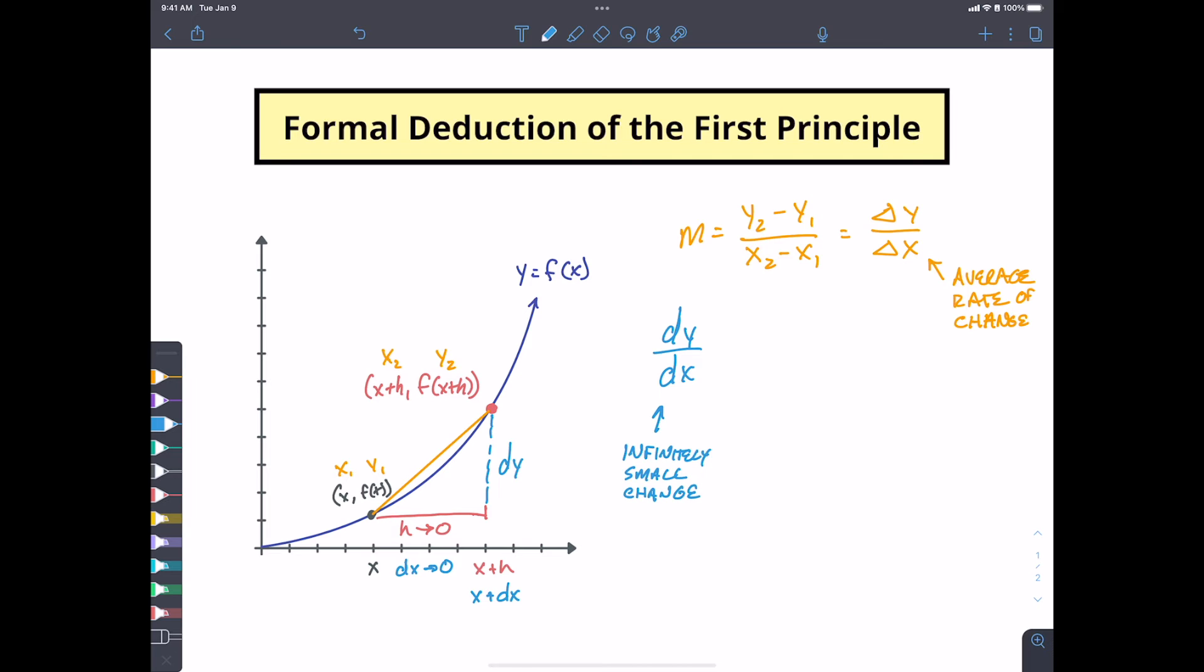And this is for our infinitely small, small change. So we kind of reserve the lowercase dy dx for this infinitely small change. So that's why delta y, delta x, this is like Greek, a Greek letter, but we're using the Roman dy dx to refer to an infinitely small change.